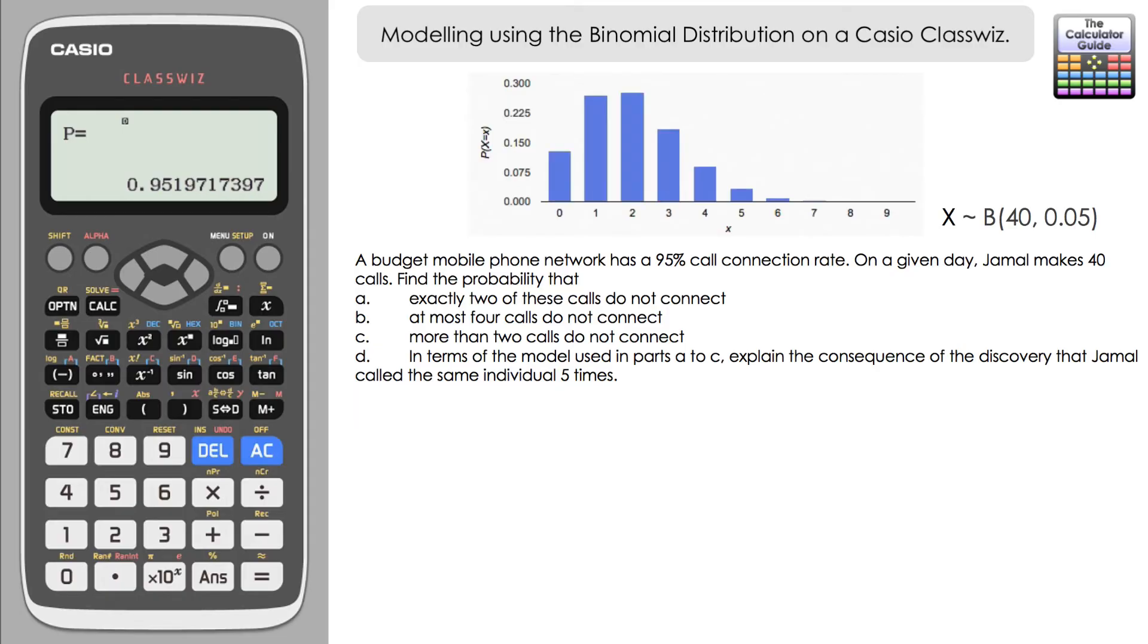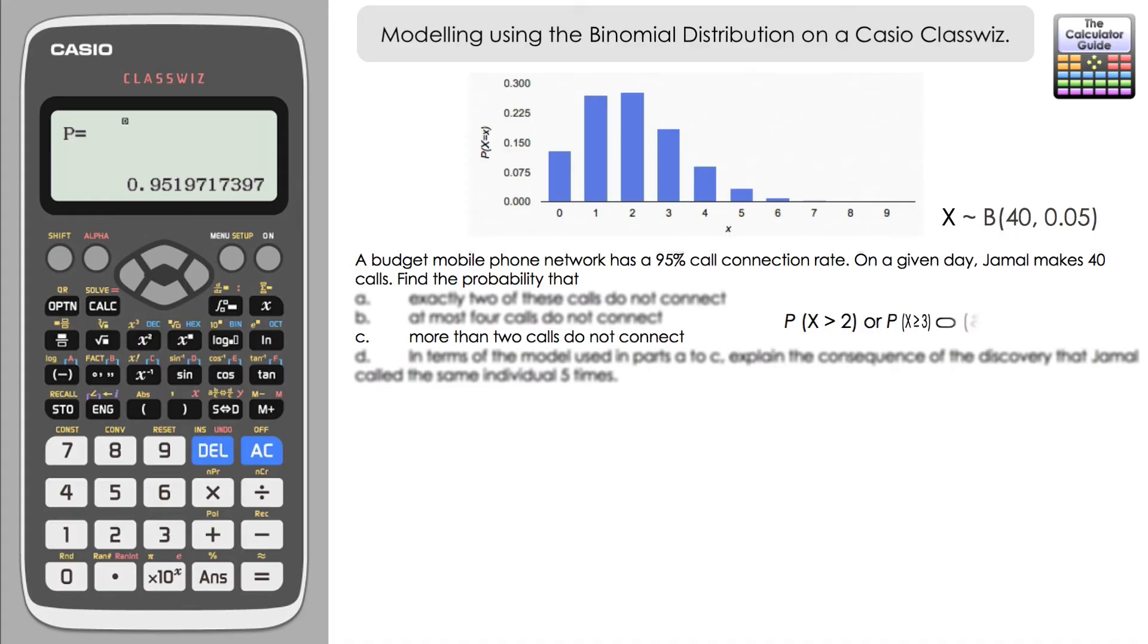So part c, find the probability that more than two calls do not connect. Well, if we're looking for more than two calls, we're going to have to be careful going to have to do one minus the probability of something so more than two calls really means the probability or is the same as the probability of three or more calls. So if we find the probability that x is less than or equal to two calls, and then subtract that from one, that will find out the probability of the number of calls that do not connect to be greater than two.